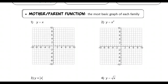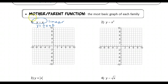The first parent function or mother function is the line y equals x. This is a linear function with a slope of 1 over 1 and a y-intercept of 0. Think of it as y equals x plus 0 — you start at 0, and your slope goes up 1 and to the right 1. You can also go down 1 and left 1. That is the mother function for a linear function.